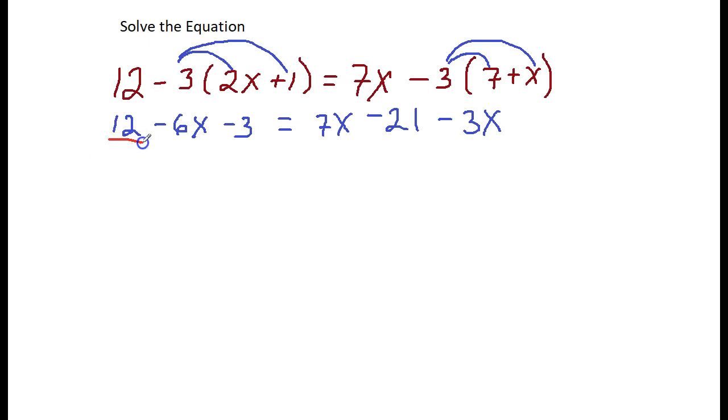On this left side, I have a 12 and a negative 3. Those are like terms because they do not have x's. The 6x is not like terms with those because it has an x. 12 minus 3 is 9, bring down the negative 6x, it just comes along for the ride, bring down the equal sign.